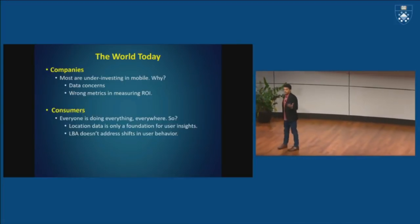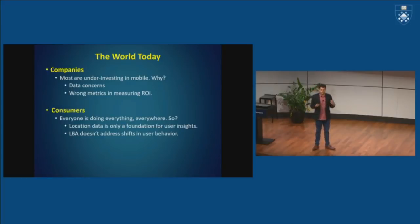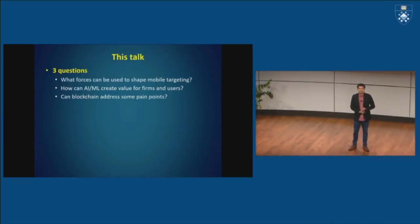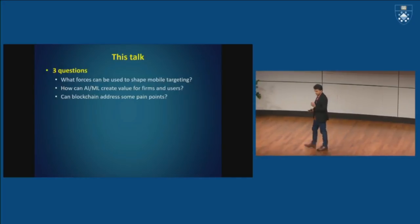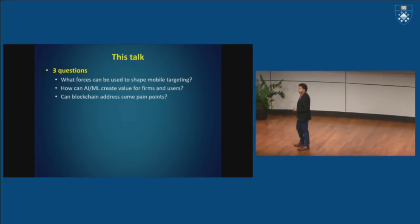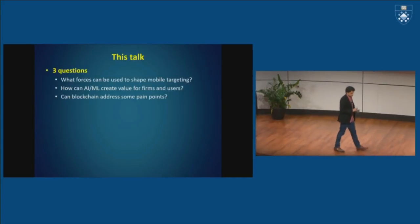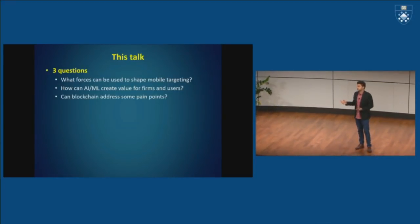So what I'm going to argue is that there are other forces out there that you can actually add on top of location data to make this a lot more meaningful and enriching. So the three topics for my talk today is, what are the other forces that we can actually add to location data to make this a lot more powerful and meaningful? What are some examples of machine learning or AI that brands and companies can use? Again, based on examples that we've already undertaken, so it's not futuristic entirely. We have evidence that this actually works. And finally, I'll address some of the pain points and where blockchain can potentially play an important role.